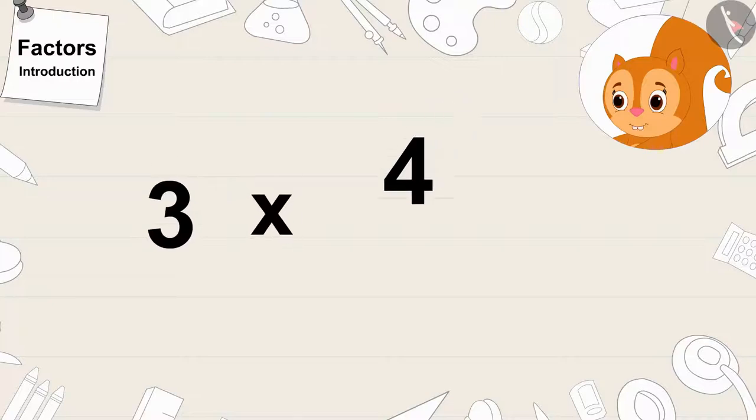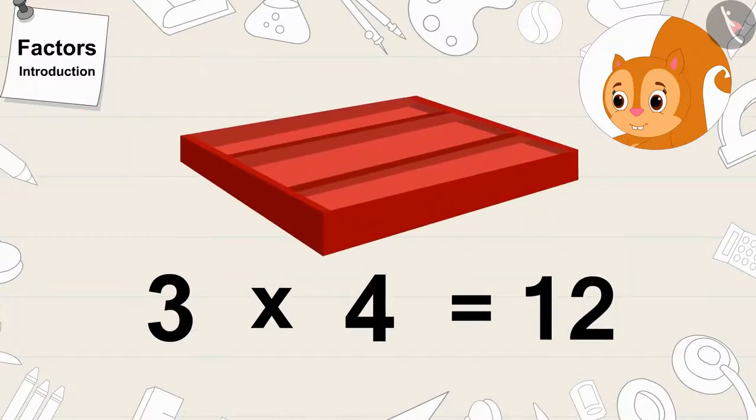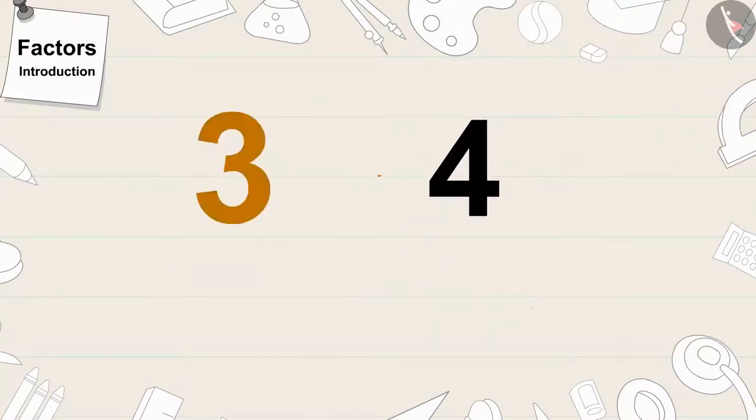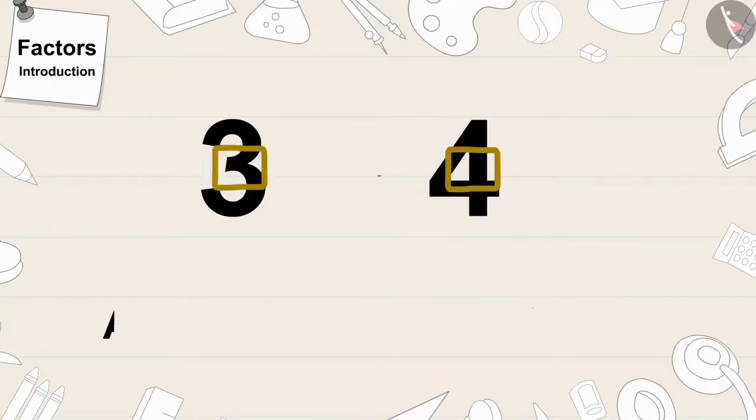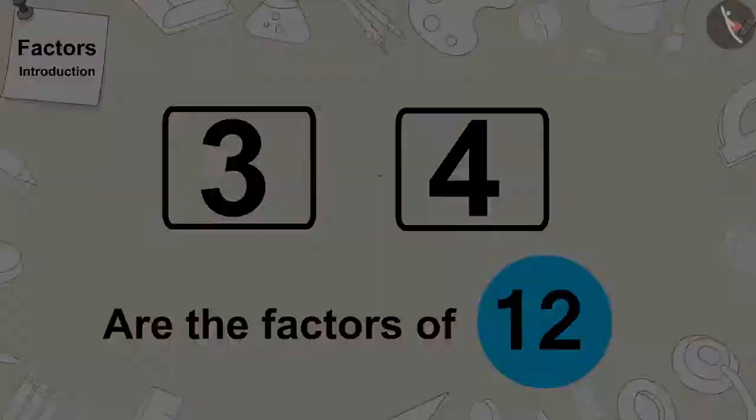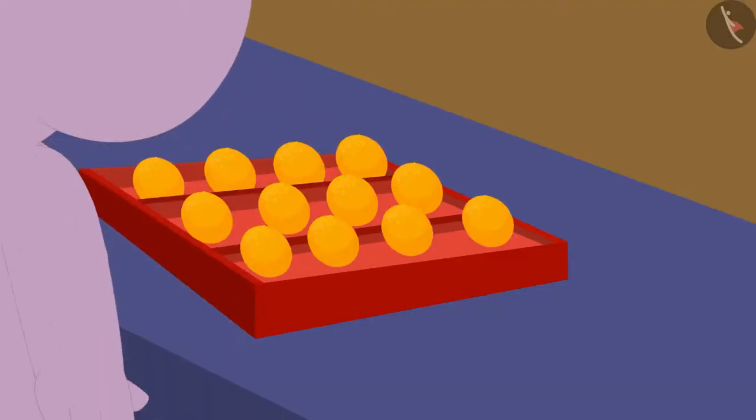3 times 4 is 12. Therefore, 12 laddus will also easily fit in Chanda's box. Or, we can also say that the numbers 3 and 4 are factors of 12. Appu filled 12 laddus in Chanda's box.